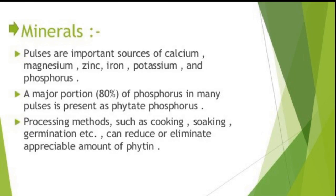Pulses contain good amounts of calcium, magnesium, zinc, iron, potassium and phosphorus. About 80% of the phosphorus is present as phytate phosphorus, which complexes with proteins and minerals, rendering phosphorus biologically unavailable to humans and animals. However, processing methods like cooking, soaking, germination and fermentation can reduce or eliminate an appreciable amount of phytate, thus rendering phosphorus available to the human body.